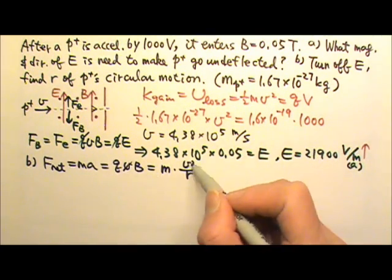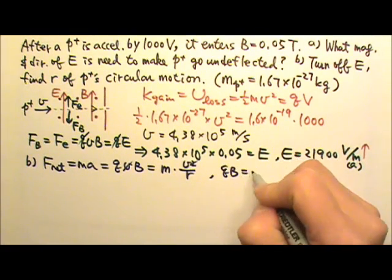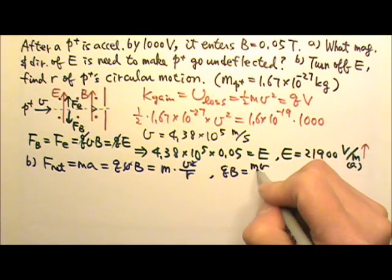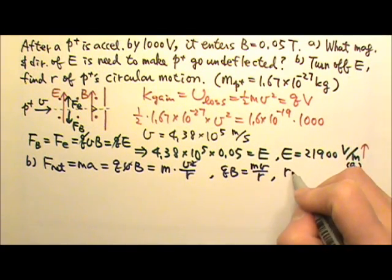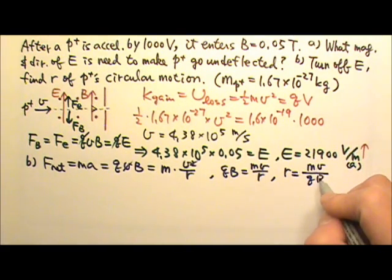We can cancel one of the v's. And we get qB equals mv over R. We need the radius, so R equals mv over qB.